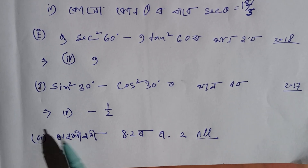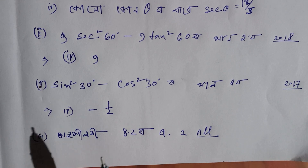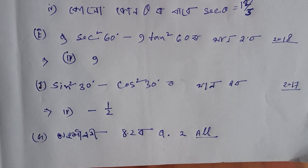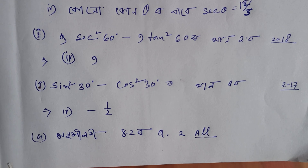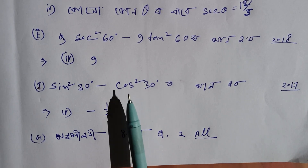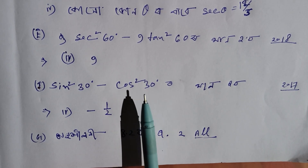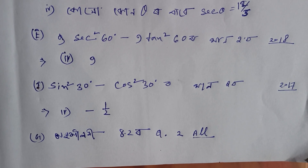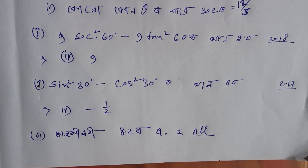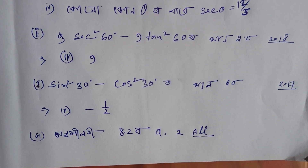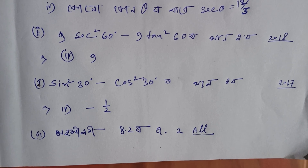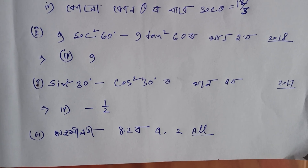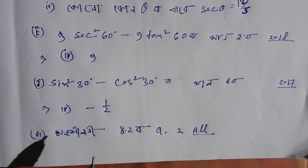Sign 30 degrees is one by two. Cos 30 degrees is root three by two. Teasing three across water. Now to make a quality calculation, you can start. Yes.